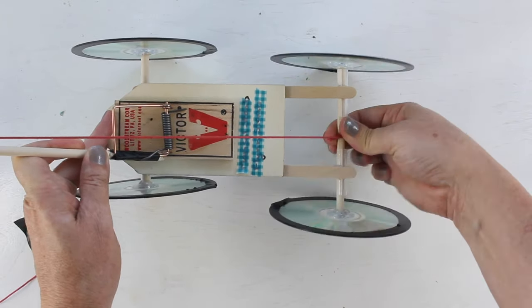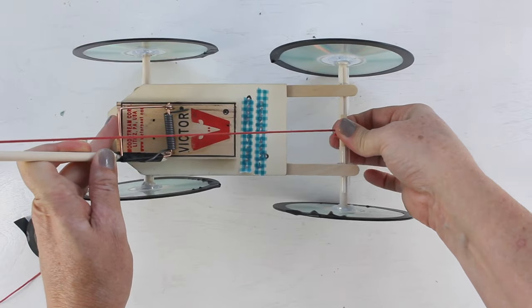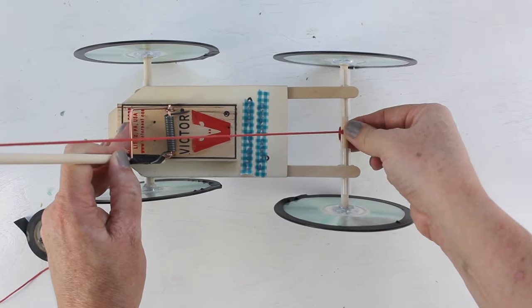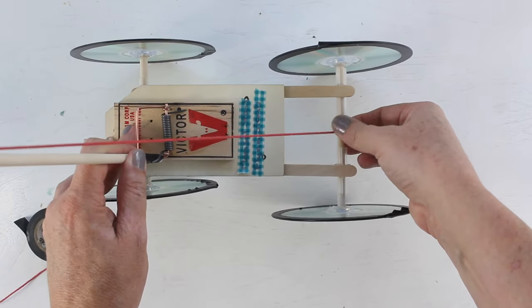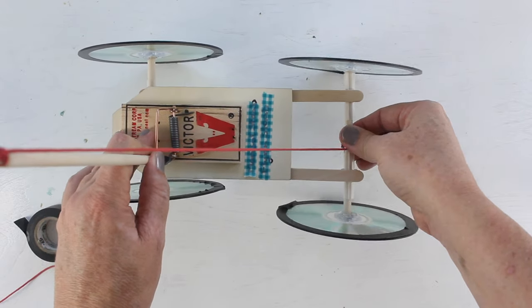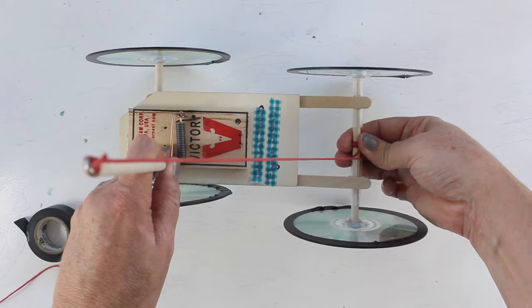Make sure not to get the string on these plastic sections because otherwise it's not going to unwind properly or move the axle to propel the car forward.